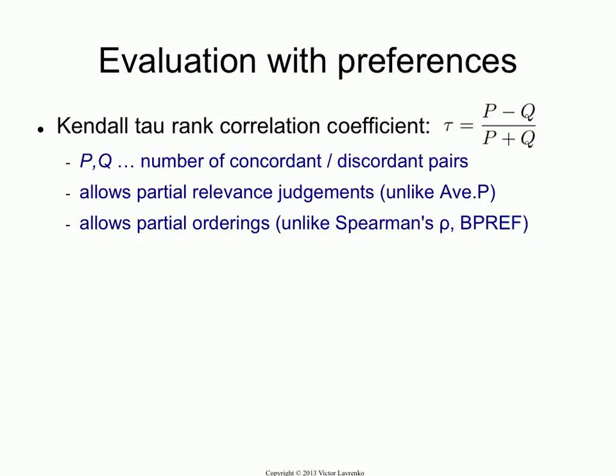What you can also do is take the preferences generated by a click and build an evaluation metric directly from those preferences. Kendall Tau is one example of building a metric like that. Suppose you have your ranking again and the user clicks on the third document. From that click we get the following set of preferences.